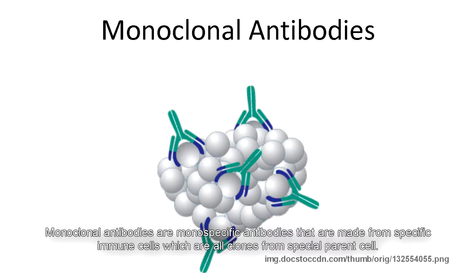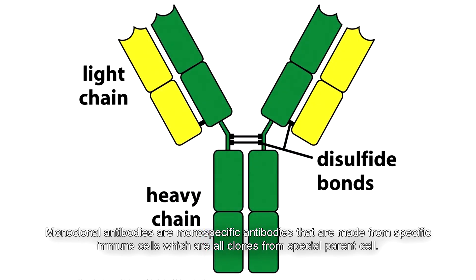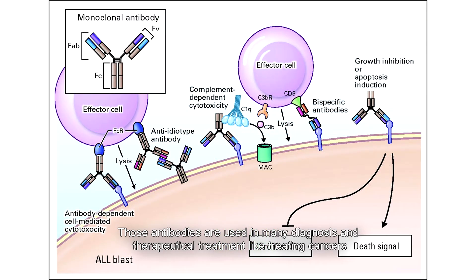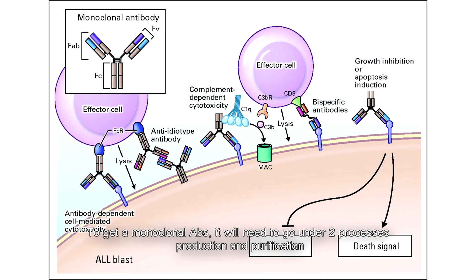Monoclonal antibodies are monospecific antibodies that are made from specific immune cells, which are all clones from a specific parent cell. Those antibodies are used in many diagnostic and therapeutic treatments, like treating cancers. To get monoclonal antibodies, it will need to go under two processes: production and purification.